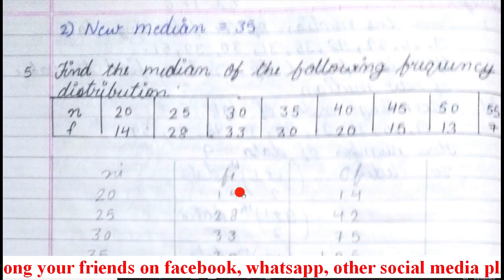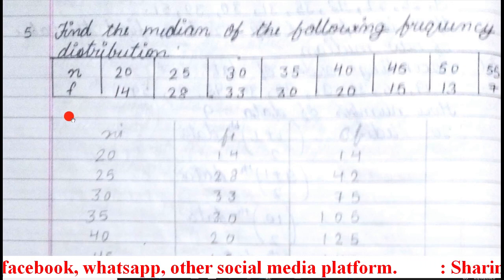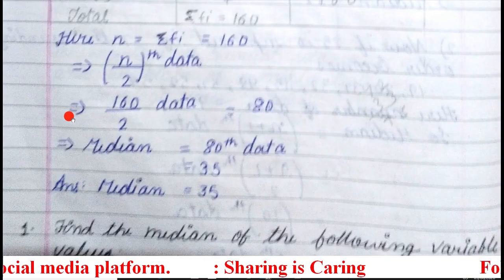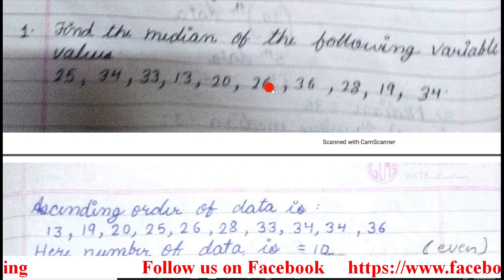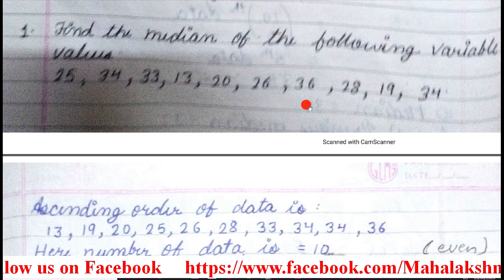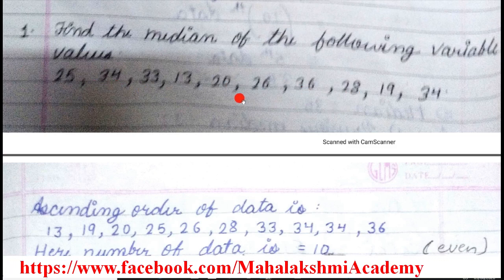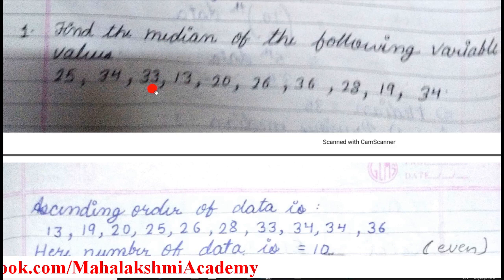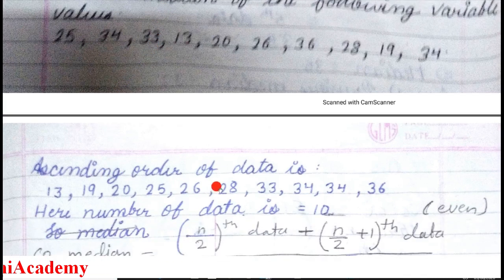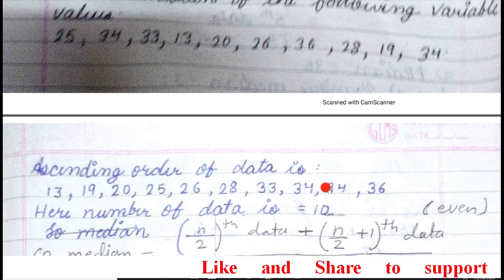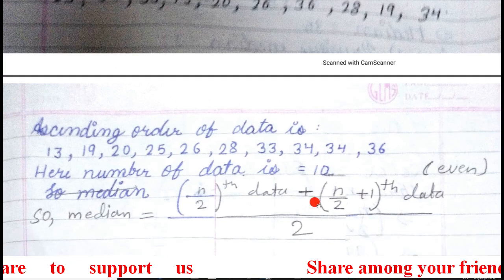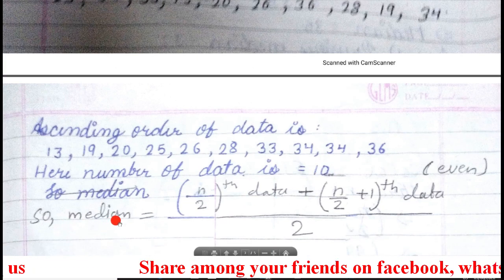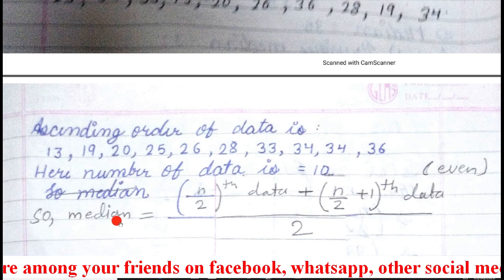Now we will understand question number 1 of the same exercise. The question is: find the median of the following variable values. These values are given and it is not in tabular form. To find the median, as mentioned in question 2, we have to arrange them in ascending order — ascending means smaller to bigger. You can arrange in descending order also. When we count, the number of data is 10, so this time the data are even. For even number of data, there is a separate formula.